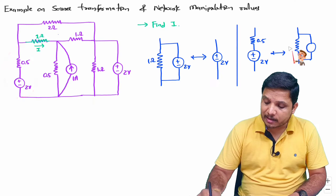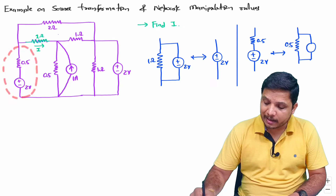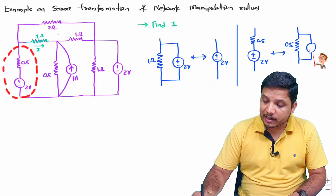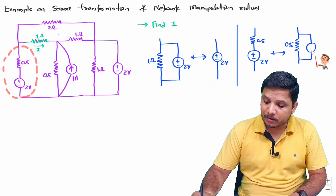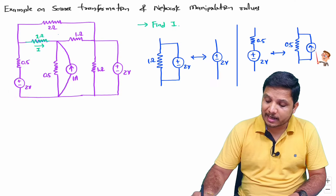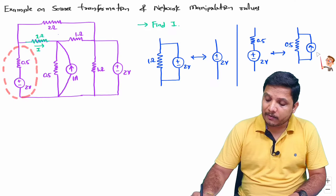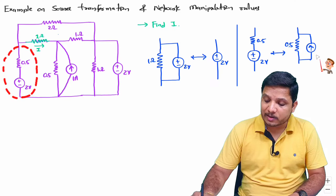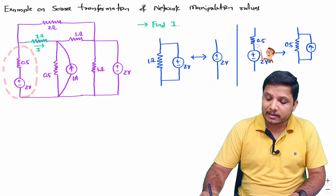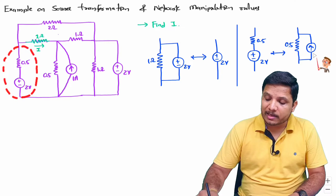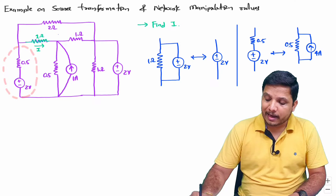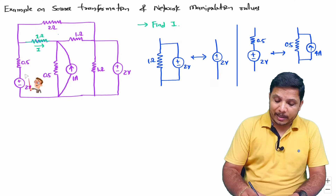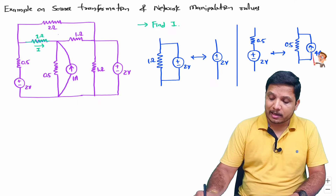The value of the resistor will be 0.5 ohm only, and the direction of the current source will be from negative to positive. The value of the current is given by V = IR, so I = V/R. Voltage is 2 and resistance is 0.5, so current I = 2 divided by 0.5, which is 4 ampere.